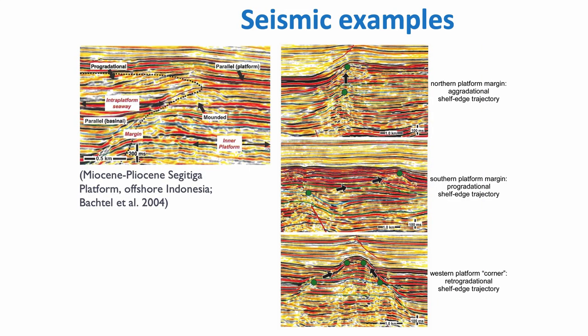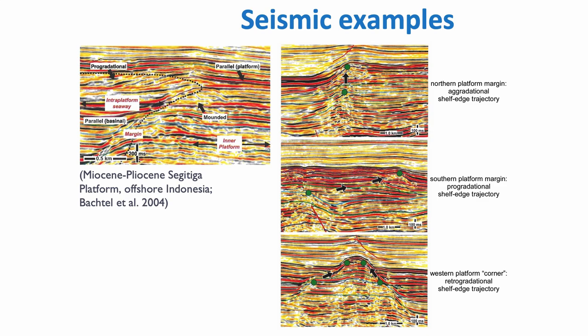The Segediga platform example is great because if you look at different sides of the same platform — on the left is the image I showed you, and on the right are three other seismic images of the same platform, the same sequence — you can see that on the western platform corner we see only retrogradational shelf edge trajectory; on the southern platform margin we see a progradational trajectory; and on the northern platform margin it's aggradational. So you always have to look very carefully at the trajectory of the reef track, or the shoal, or even in clastics the beach sand, because it only tells you something about the combination of base level change and sediment supply. Those two concepts cannot be separated.